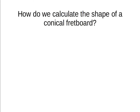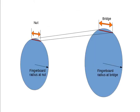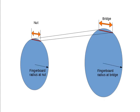How do we calculate the shape of a conical fretboard? We know that for a conical fretboard, as we move up the neck, the radius of curvature of the fingerboard increases. This diagram shows the basic idea — it only shows the outermost strings because the spacing between them is one of the measurements we need. What we're looking for is a formula that gives us the fingerboard radius at any point between the nut and the bridge.